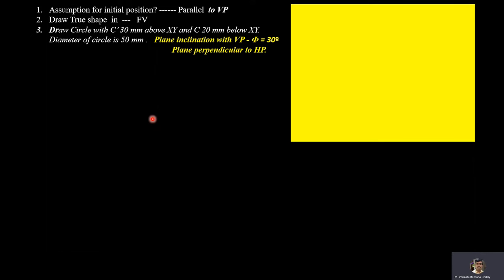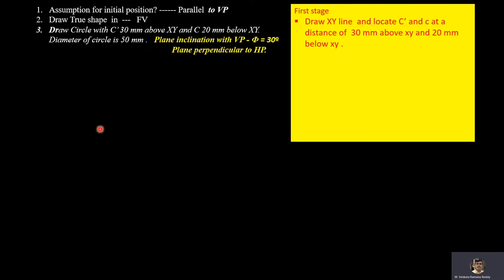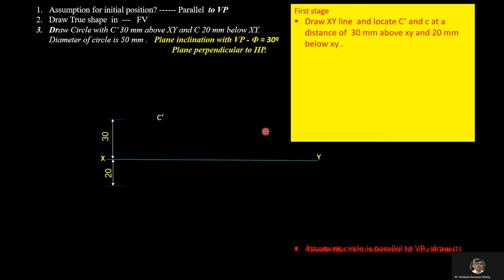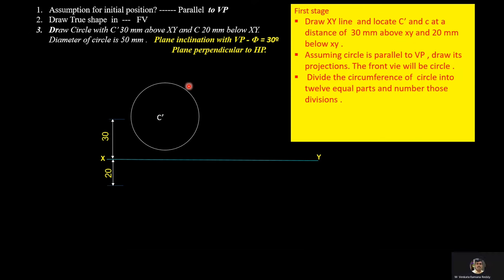The projection of a circle inclined to VP and perpendicular to HP is divided into two stages. In the first stage, draw the XY line and locate C-dash at 30 mm above XY and C at 20 mm below XY. Since the plane is parallel to VP, you get the true image on the vertical plane. Draw the circle and divide the circumference of the circle into 12 equal parts.